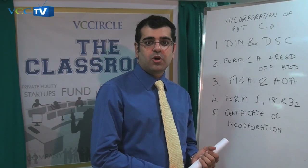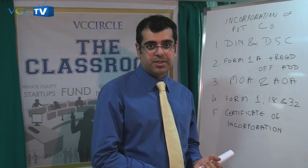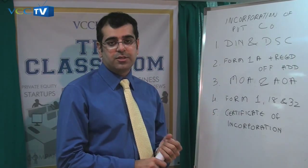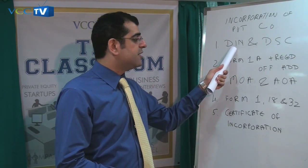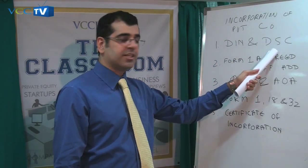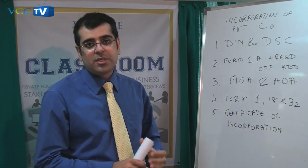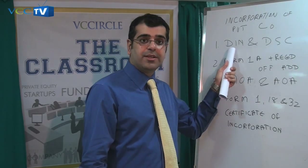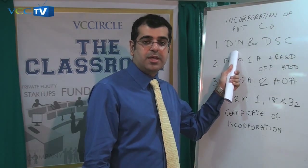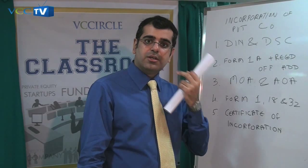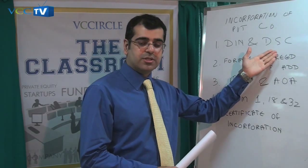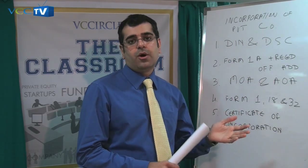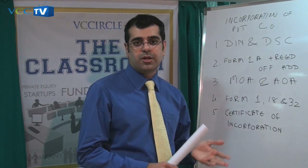Now I am going to be talking about the incorporation process of a private limited company. The primary requirement for making applications is a Director's Identification Number and a Digital Signature Certificate. Every person who intends to become the director of a company is required to have a unique Director's Identification Number. In addition to this, the director is also required to obtain a Digital Signature Certificate, which is required to sign all the forms that have to be uploaded on the ROC website.